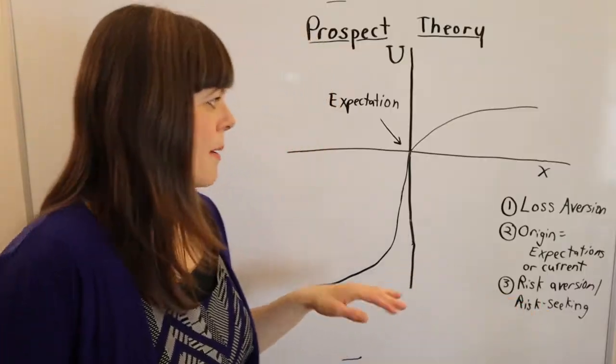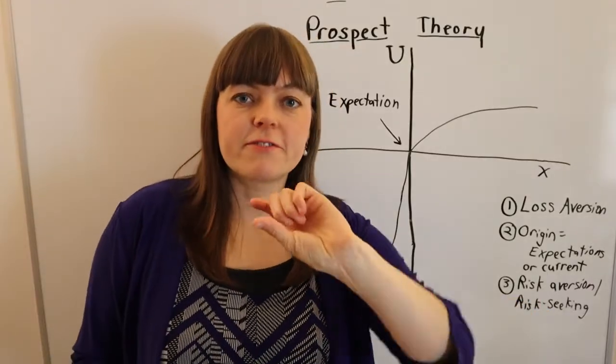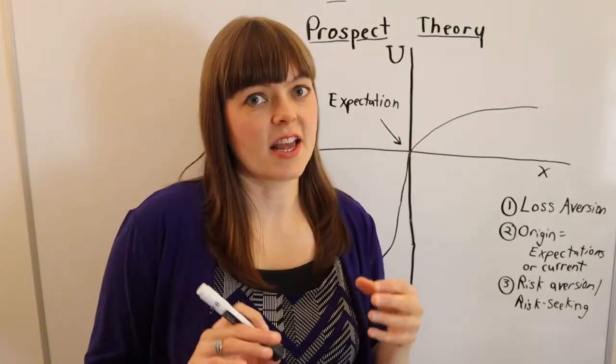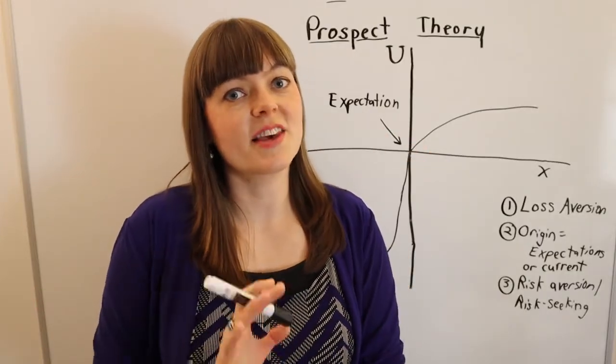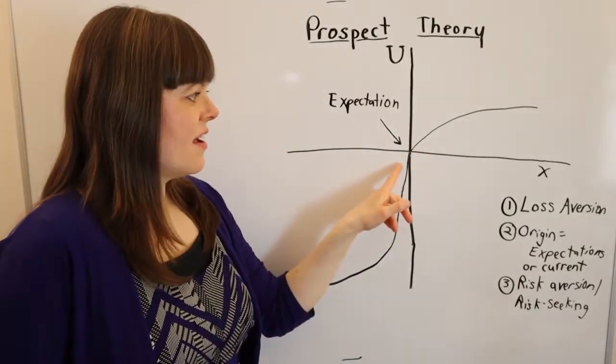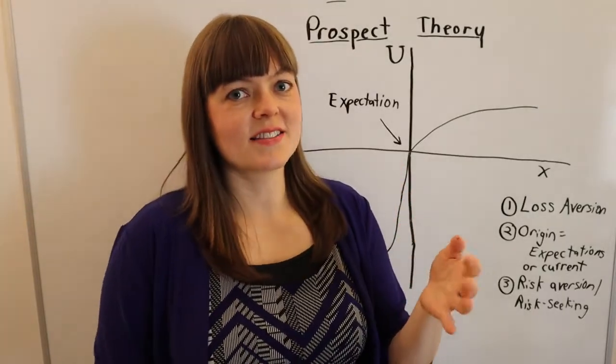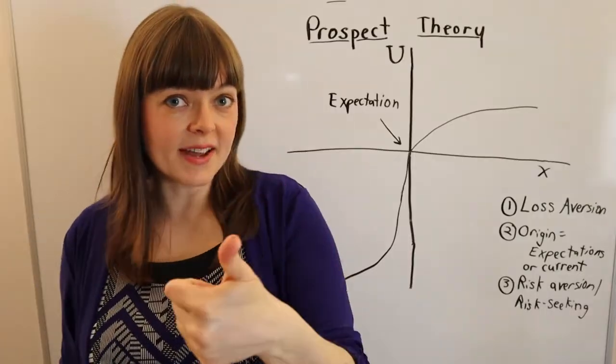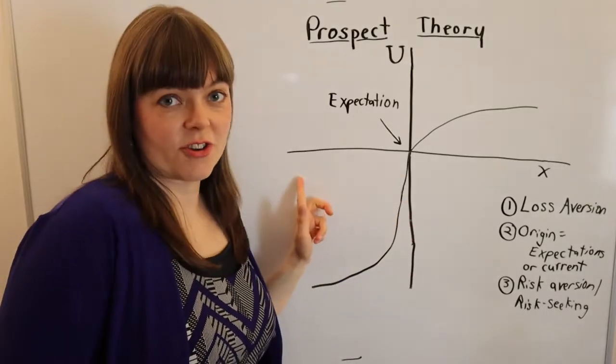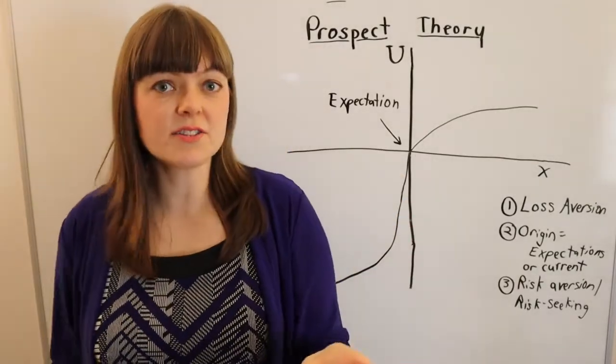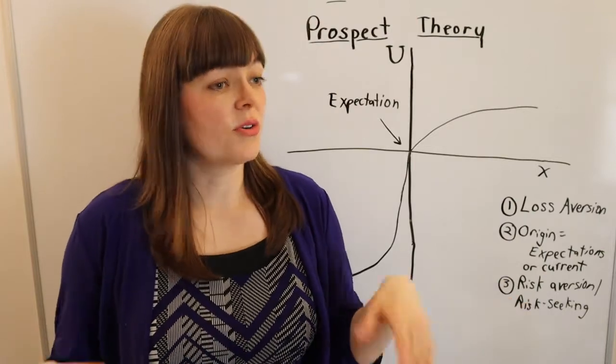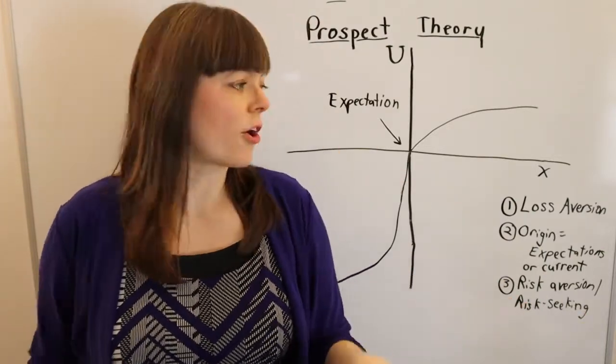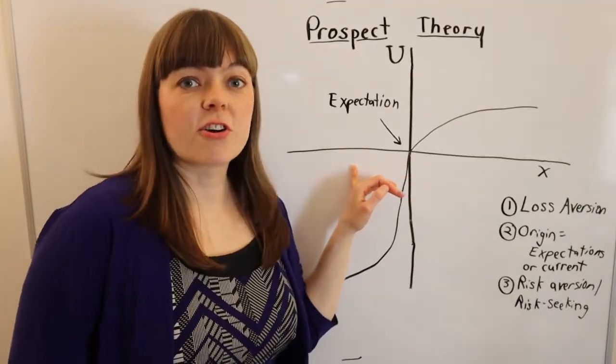But if you give the flip version of that, it changes people's answers. And instead of going for the sure bet, they go for the risk. So in this case, there's a piece of paper that says, you have to have this risk. So if I flip heads, you lose $100. If I flip tails, you lose nothing. You can either keep that risk that's been placed on you, or you can lose $50 for sure.